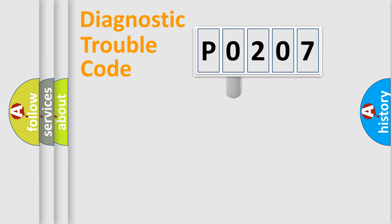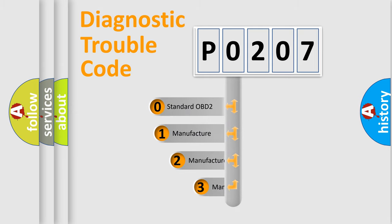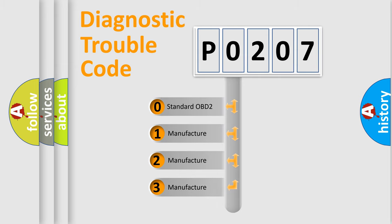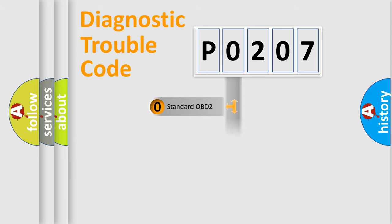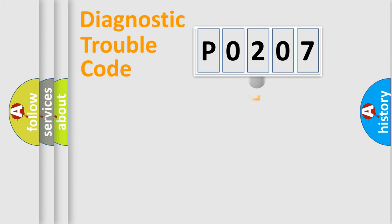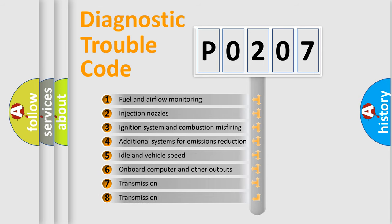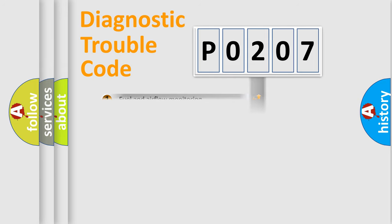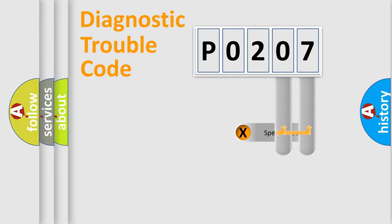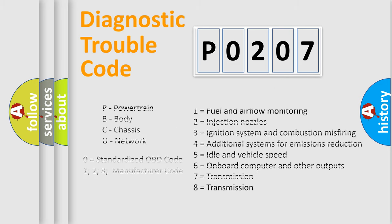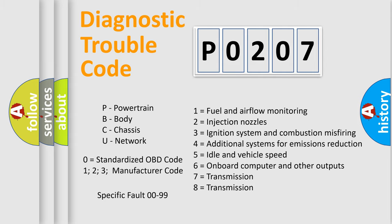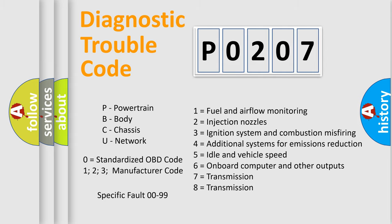This distribution is defined in the first character of the code. If the second character is expressed as zero, it is a standardized error. In the case of numbers 1, 2, or 3, it is a more specific expression of a car-specific error. The third character specifies a subset of errors. Only the last two characters define the specific fault of the group, and this division is valid only when the second character code is expressed by the number zero.